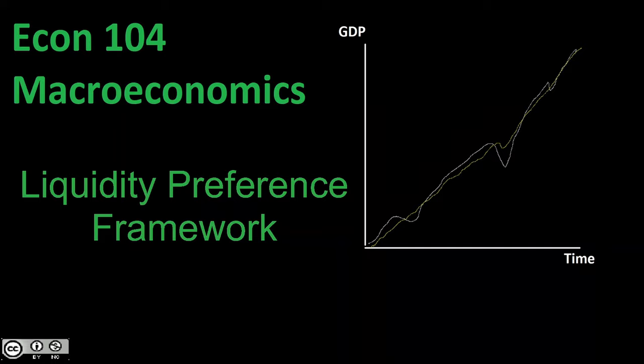Welcome back to Econ 104, Introduction to Macroeconomics. In this video, we're going to be taking a look at the Liquidity Preference Framework. What exactly is the Liquidity Preference Framework? Ultimately, this is the model we're going to build up that evaluates the trade-off between money and bonds.